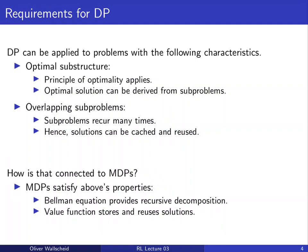The Bellman equation provides the recursive decomposition, so we can structure the entire state and action space into pieces, solve the different pieces, and then put it together. The re-caching or reusing idea is then handled by the value function. As seen in the backup diagrams, we can reuse and cache the value functions from successor states to current states, giving us that overlapping sub-problem structure.